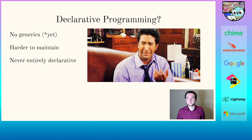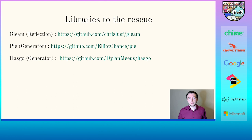You will have to hide the loops somewhere in some part of your code. But luckily there are actually quite a few libraries — some that I highlighted here — that take care of this in various ways. Gleam uses reflection and then you have Pi and Hasgo, which are code generators.